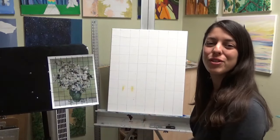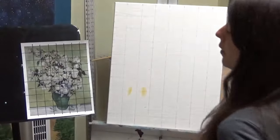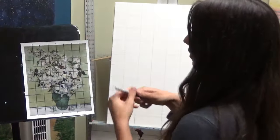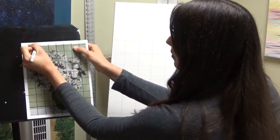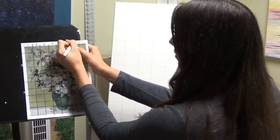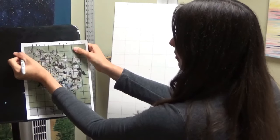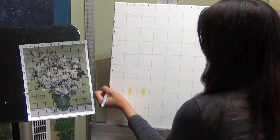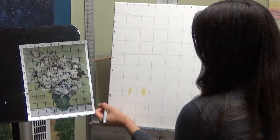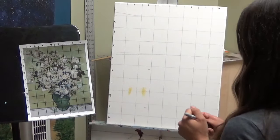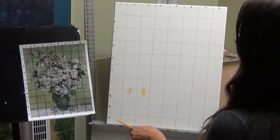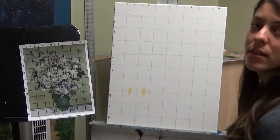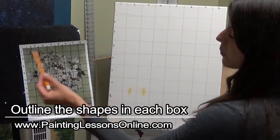There we are. Now we have our two images ready for transfer. It may make it easier for you to number your boxes. Now what I'm going to do is look in each box and see what's there. In the first box, we have our first flower.